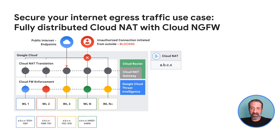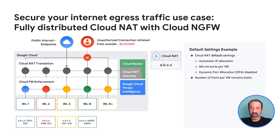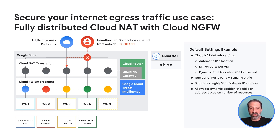Let's take a closer look at how Cloud NAT works. In this first example, we are using Cloud NAT's default settings — specifically automatic IP allocation with a minimum of 64 ports per VM. Each public IP used in Cloud NAT offers just over 64,000 ports. Since our minimum ports per VM is set at 64, Cloud NAT would be able to support just over a thousand VMs on a single IP address. This does not mean VMs can only make 64 simultaneous connections — it means each VM can open 64 connections to the same destination IP on the same port.